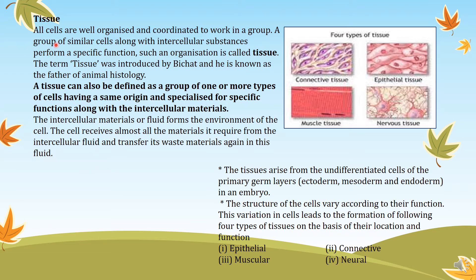All cells are well organized and coordinated to work in a group. A group of similar cells along with intercellular substances perform a specific function. Such an organization is called a tissue. The term tissue was introduced by Bichat, and he is known as the father of animal histology. Histology is the branch of science that deals with the study of cells and tissues.